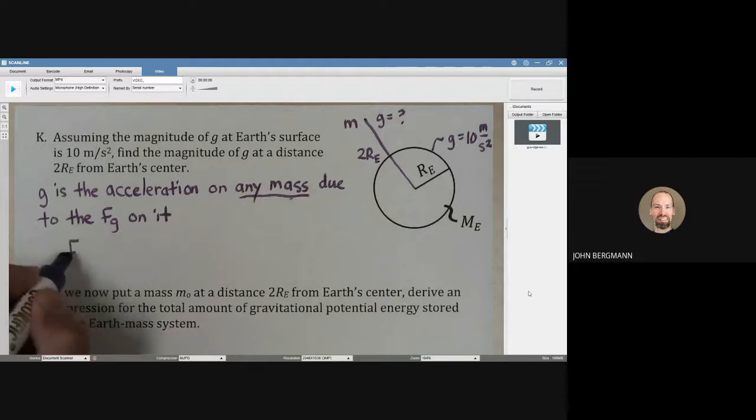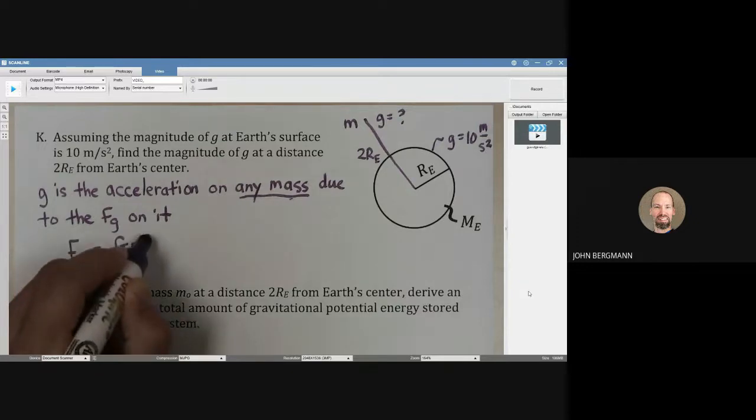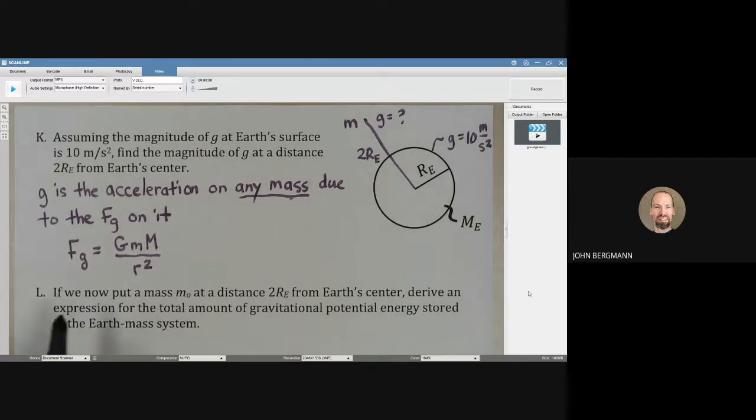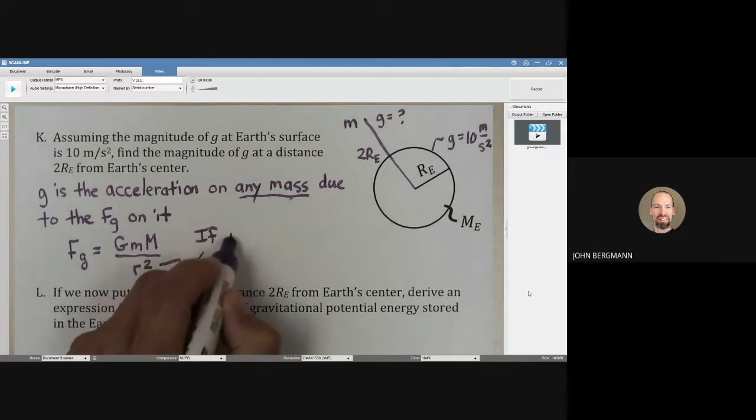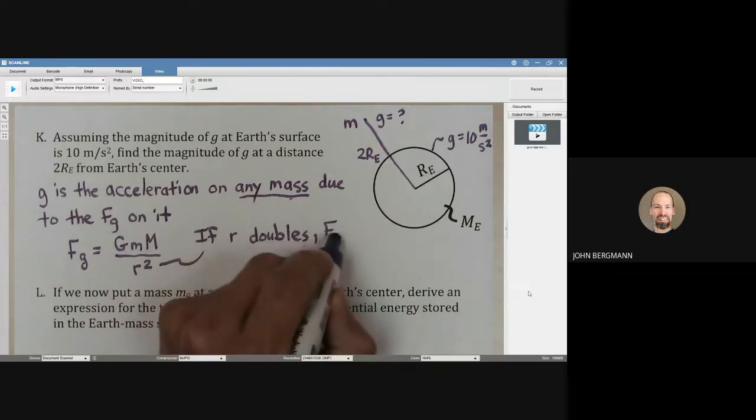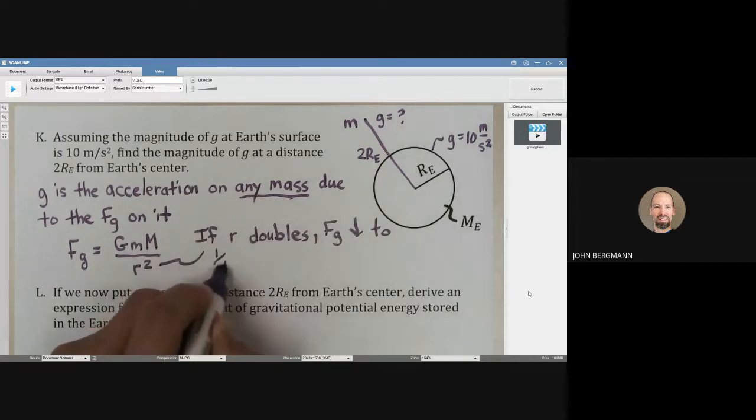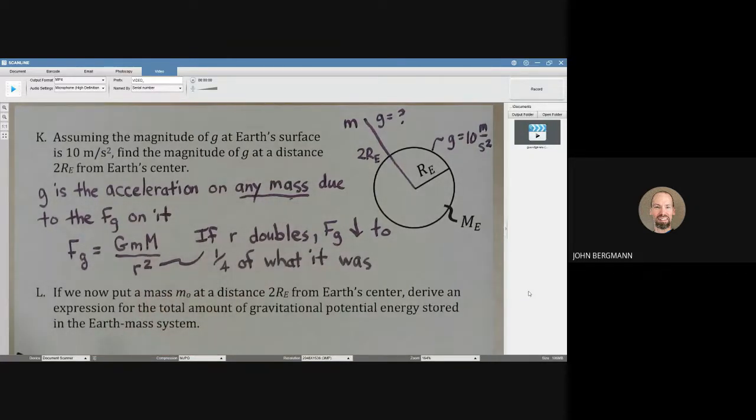The force of gravity on that is going to be, according to Newton's law of gravity, big G times little m times big M divided by the distance between those things squared. What are we seeing here? We're seeing this denominator right there. If R doubles, then FG decreases to one-fourth of what it was. And that's what's happening here.